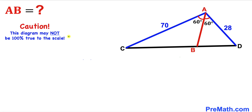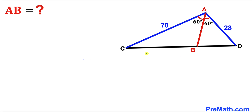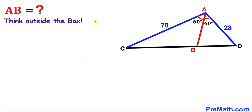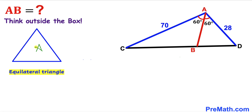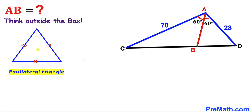Please keep in mind that this figure may not be 100% true to scale. Let's get started. We can observe that this angle is 60 degrees and this angle is 60 degrees as well. Therefore, we are going to think outside the box and consider this an equilateral triangle, since all these side lengths are congruent.